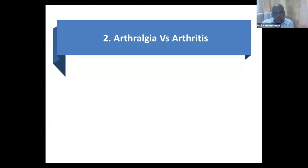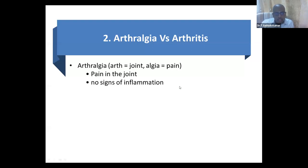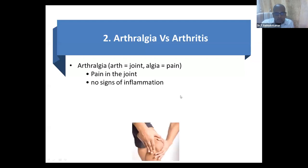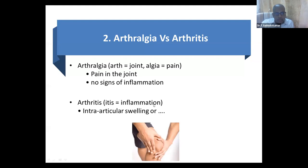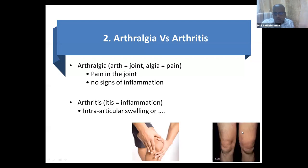Before going to arthritis, we should be very clear in our mind. Three questions you should ask any child who comes with joint pain. First: is it arthralgia or arthritis? Arthralgia means pain in the joints with no signs of inflammation — the child just has pain. Arthritis, the 'itis' means inflammation. Always remember: arthralgia is not equal to arthritis. All arthritis will have arthralgia, but not all arthralgia is arthritis.